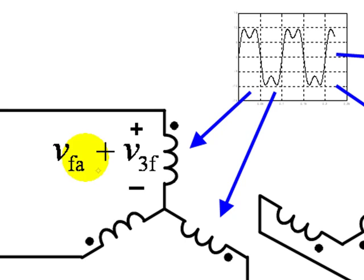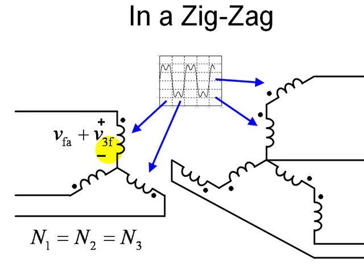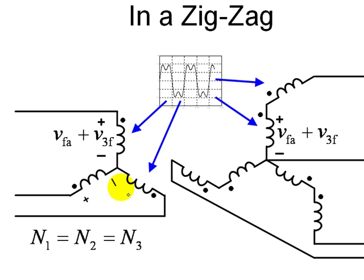Those coil voltages have both a fundamental component and a triple frequency component, such as VFA and V3F for phase A. Because the number of turns in the primary, secondary, and tertiary are assumed equal, the voltage in the secondary coil is exactly the same as in the primary — it also has a fundamental component VFA and a triple frequency component V3F. Similarly, the voltage in another coil has a fundamental VFC and a triple frequency component, shifted by the appropriate number of degrees.